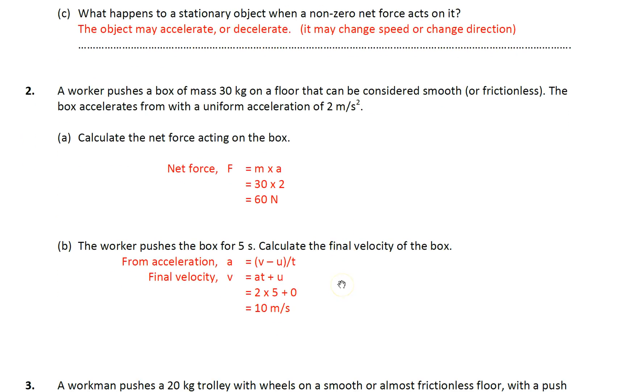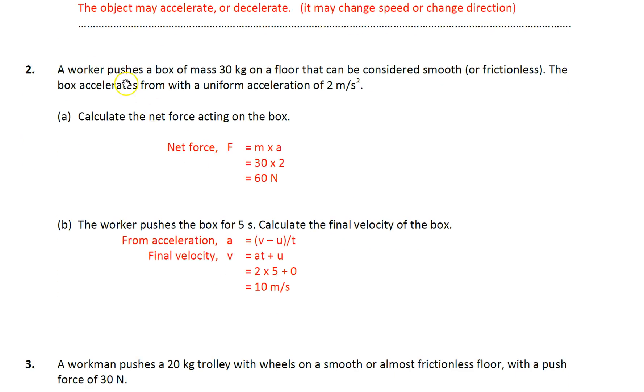Okay, let's look at this example of question two. A worker pushes a box of mass 30 kilogram on the floor that can be considered frictionless, means there is no friction, smooth. The box accelerates with a uniform acceleration of 2 meters per second square.